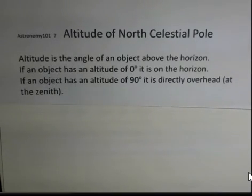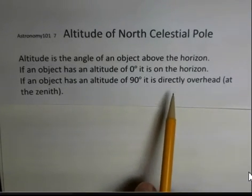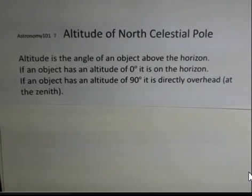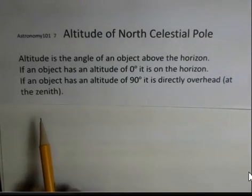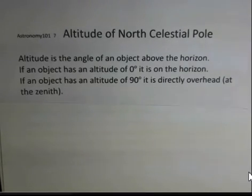If an object is on the horizon, its altitude is zero degrees. It doesn't matter if it's north, south, east, or west. If the object is directly overhead, the altitude is 90 degrees. This overhead location on the sky is called our zenith.